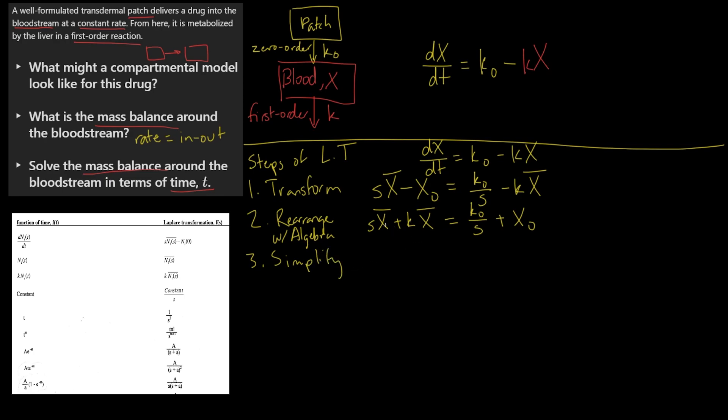So we can factor the X̄ out, we get s plus k. And we can recognize that X₀ in many cases is zero, just like this one, and that's because the drug is all in the patch to start with. We're saying that none of it is in the blood because they're just starting this patch. The initial concentration, or the initial amount in the bloodstream, is zero.